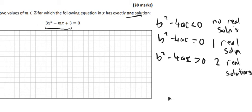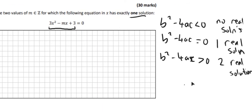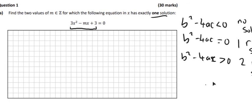So we need to know those three things, and in this question it tells us that it has exactly one. So if it has exactly one, we'll see there, it has to be equal to zero. So b squared minus 4ac has to be equal to zero.